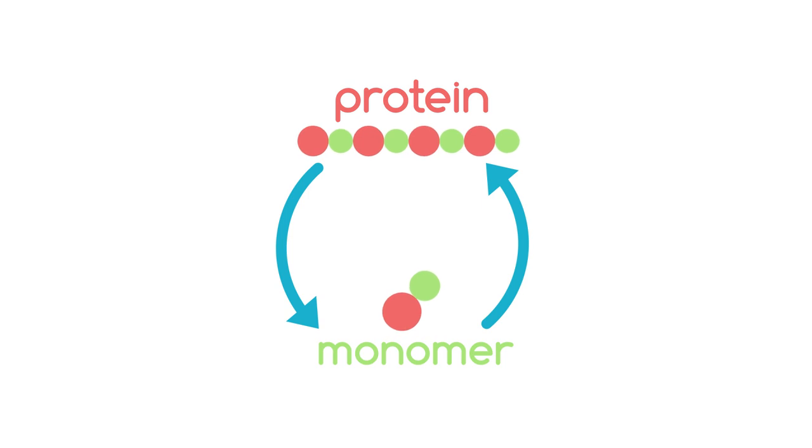Protein, for example, to make your skin and muscles and other organs, comes from joining amino acids together.